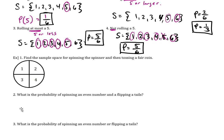Let's find one more sample space for a different problem. It says: find the sample space for spinning the spinner — which has sections 1, 2, 3, or 4, just like in the game Twister — and then tossing a fair coin, which involves heads or tails. So we'll create our sample space. The 'and then' is also important here.